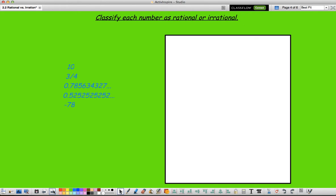For now though, we are going to classify our numbers as rational or irrational just based on the definitions that we have. So we have 10. 10 has no decimal. So it's a whole number, so it terminates, so it's a rational number.